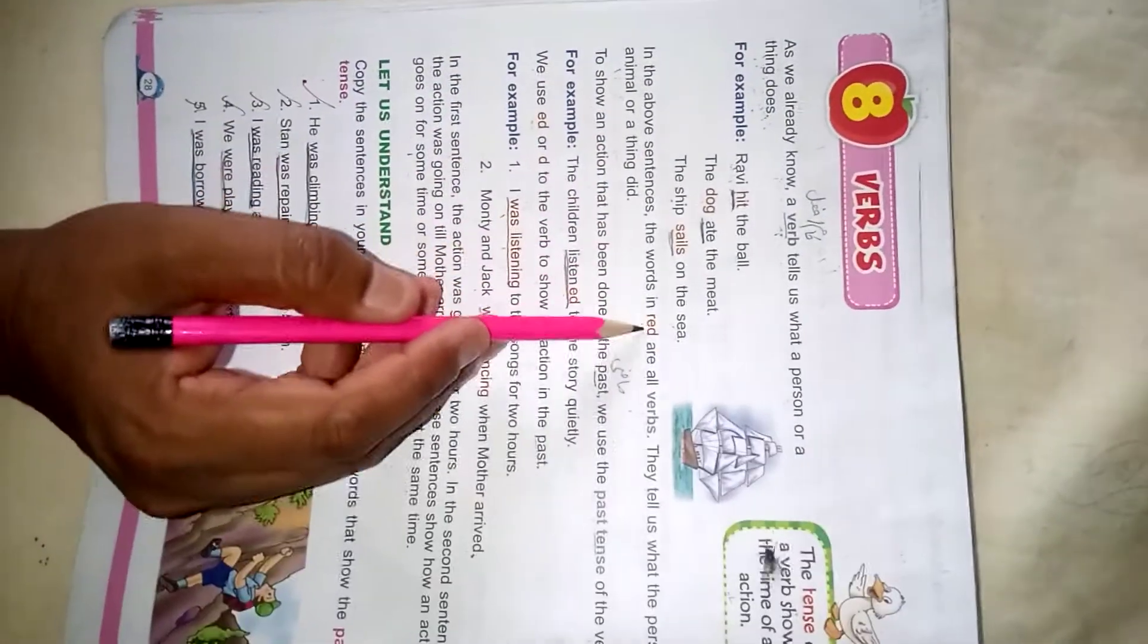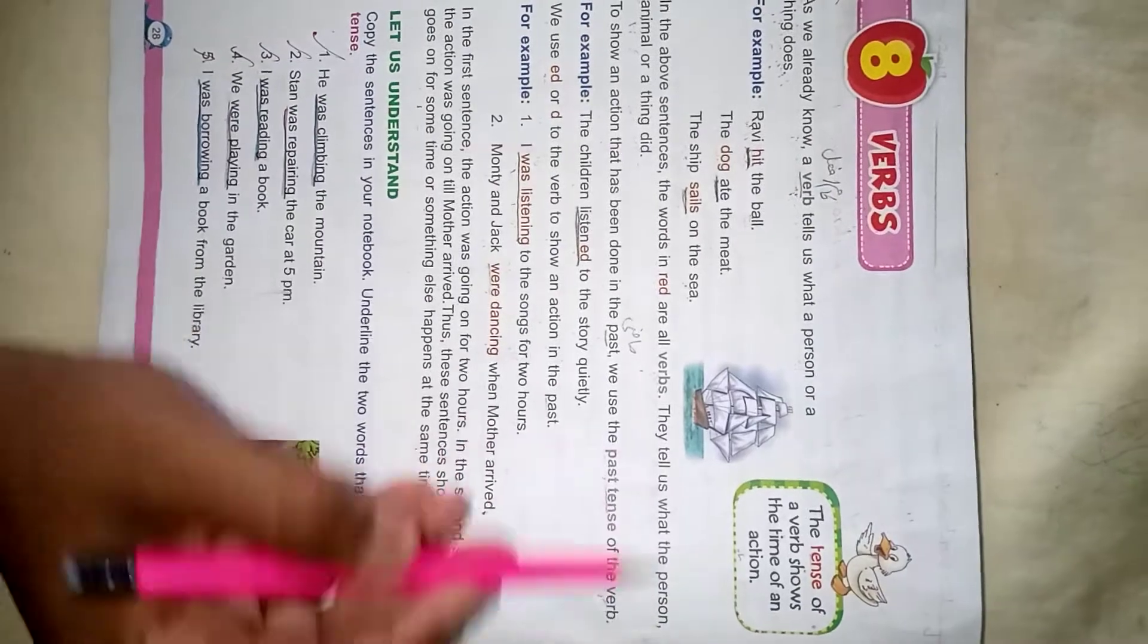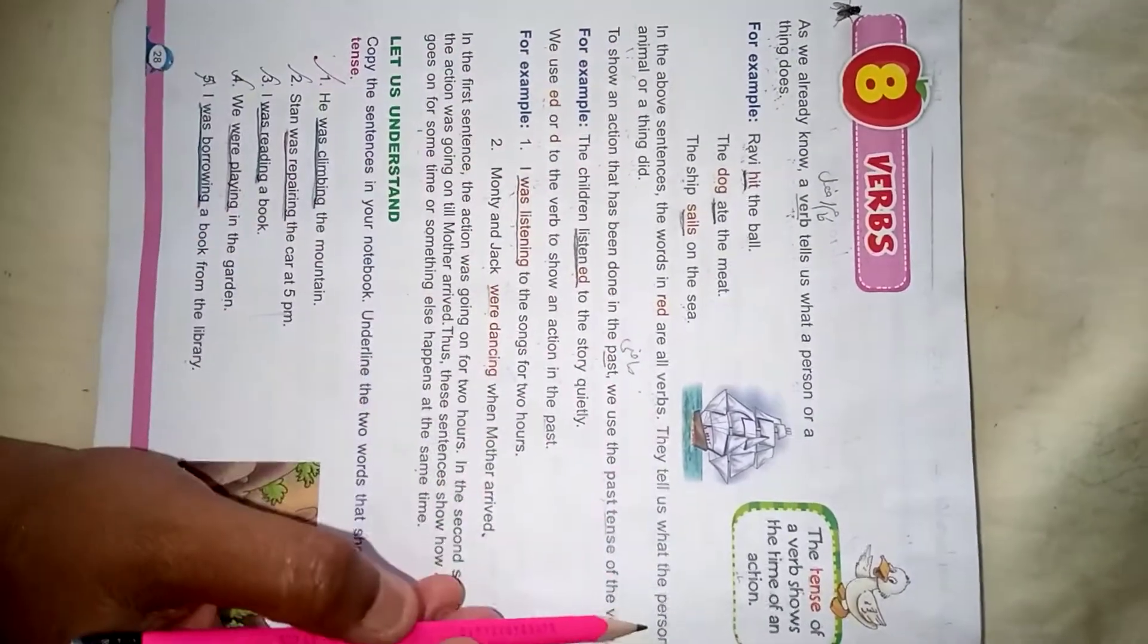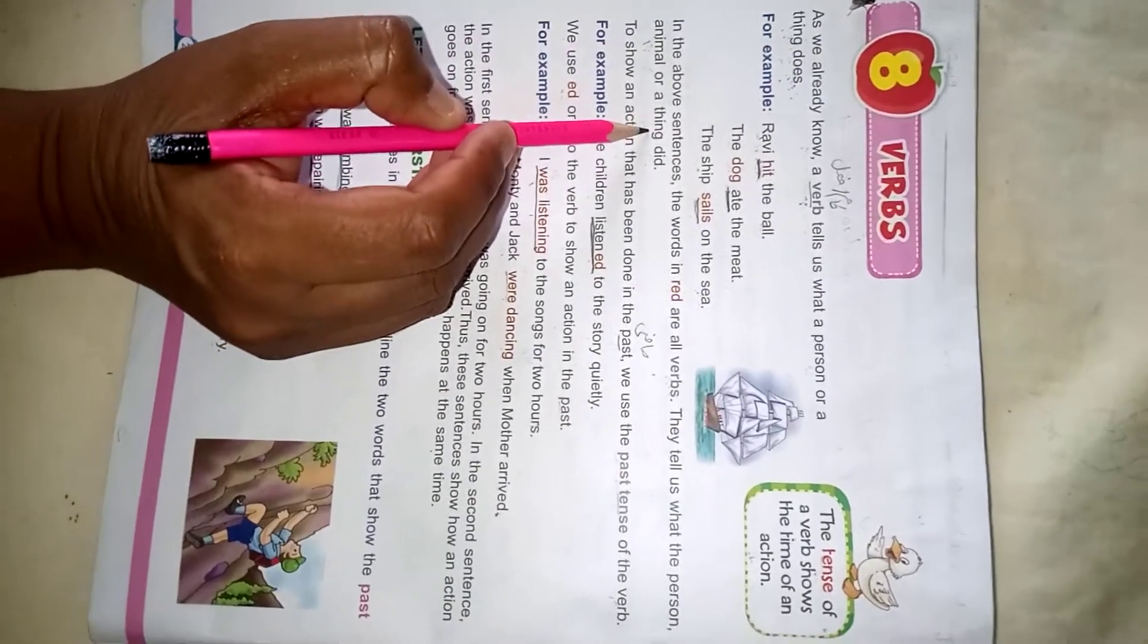In the verb sentences, the words in the red are all verbs. They tell us what the person, animal, or thing did.